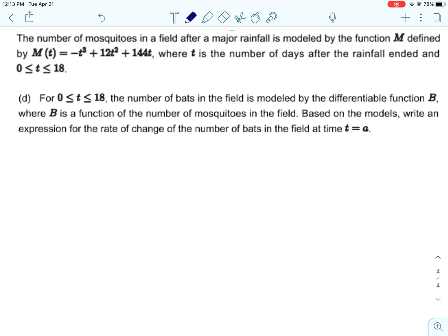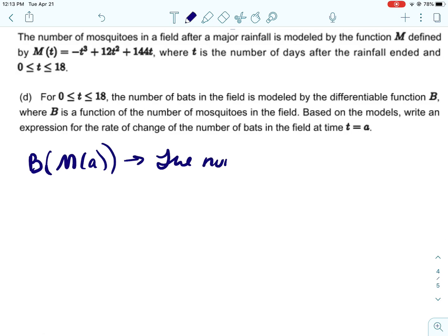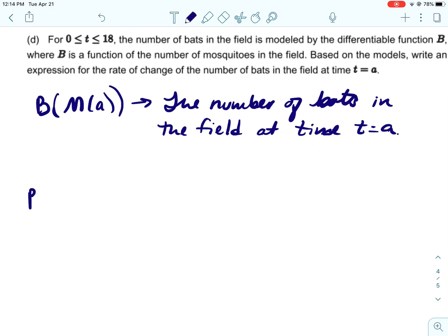Okay, so for this last one, it's a new function about bats. So the number of bats in the field is modeled by the differentiable function B, where B is the function of the number of mosquitoes in the field. Based on the model's write an expression for the rate of change in the number of bats. So B is a function of the number of bats, so we're using a for our time. So that represents the number of bats in the field at time t equals a.